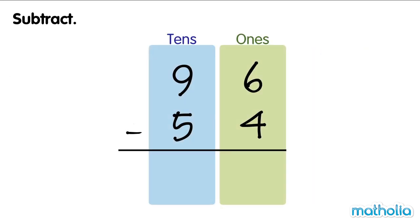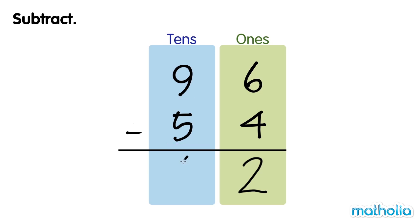Subtract. Let's find 96 minus 54. Start by subtracting the ones: 6 ones minus 4 ones equals 2 ones. Next, subtract the tens: 9 tens minus 5 tens equals 4 tens. 96 minus 54 equals 42.